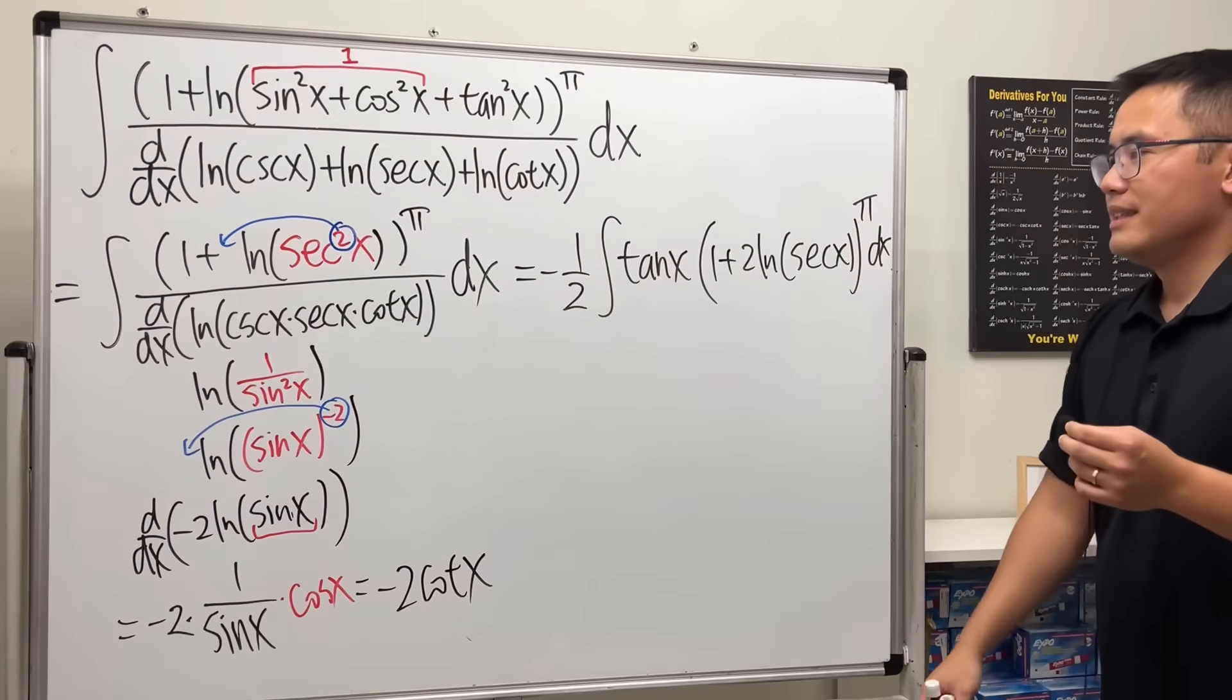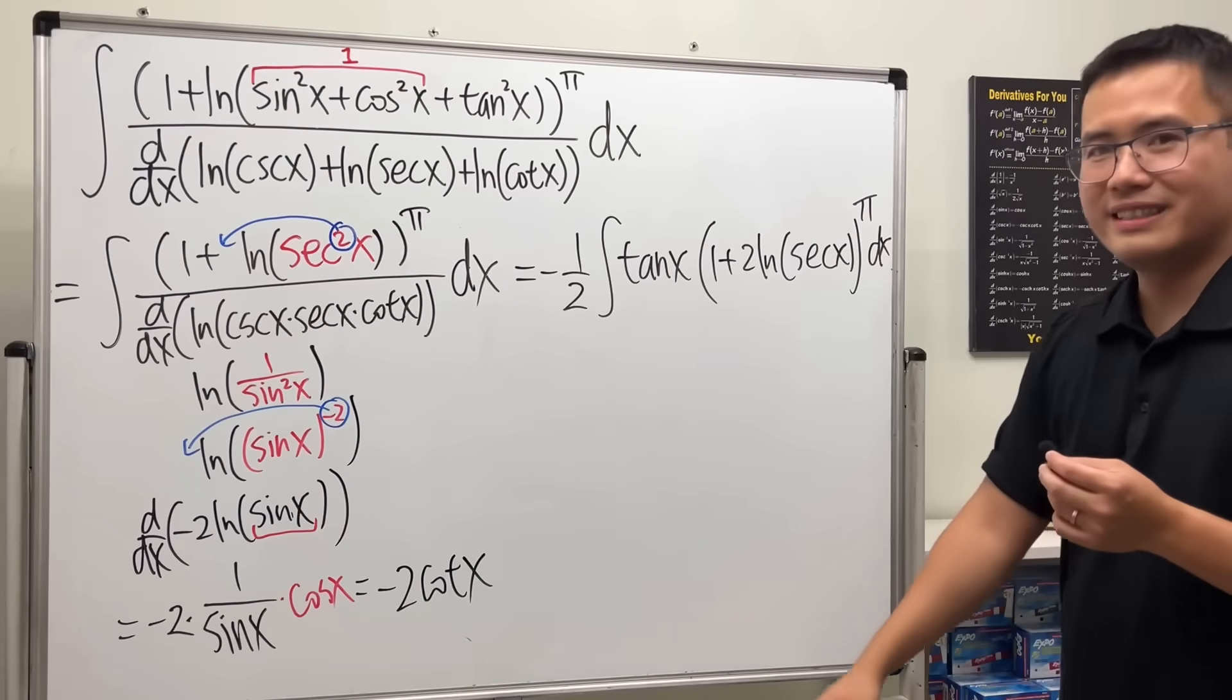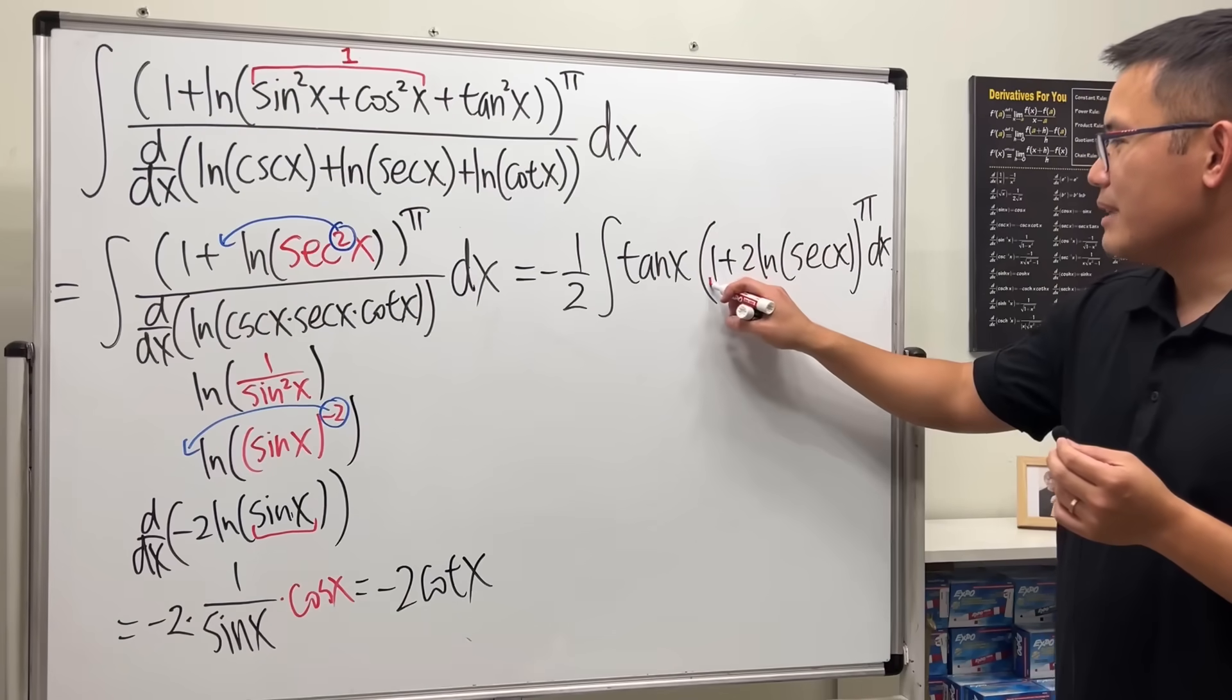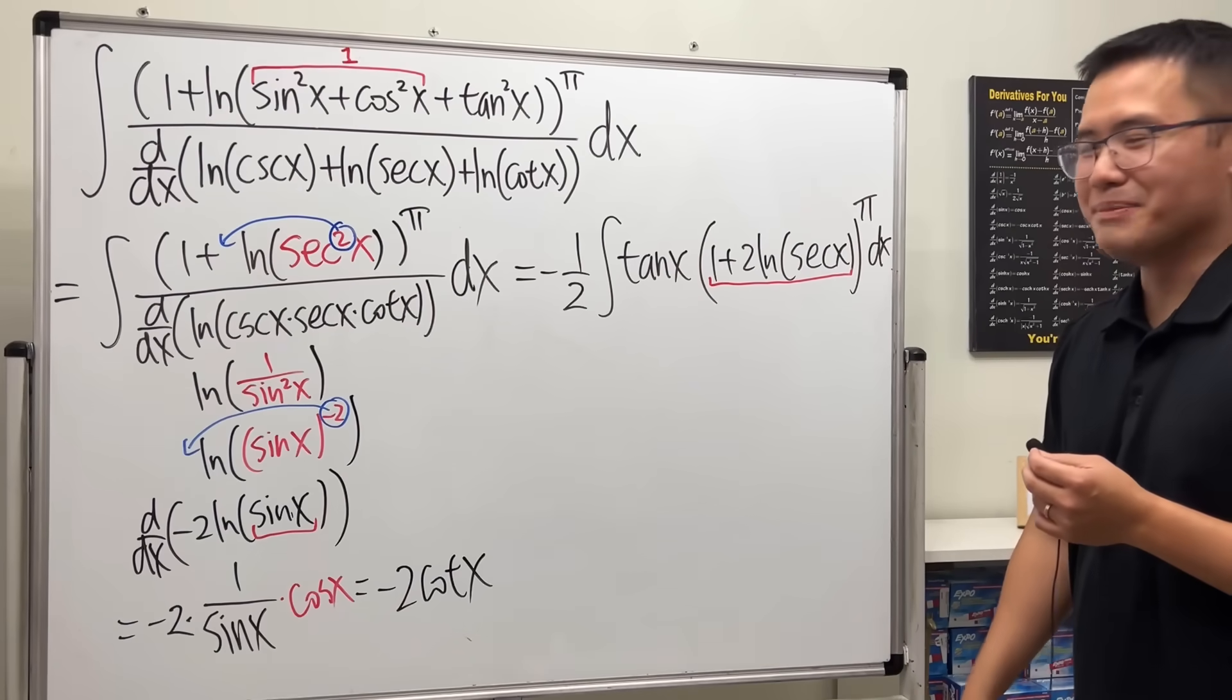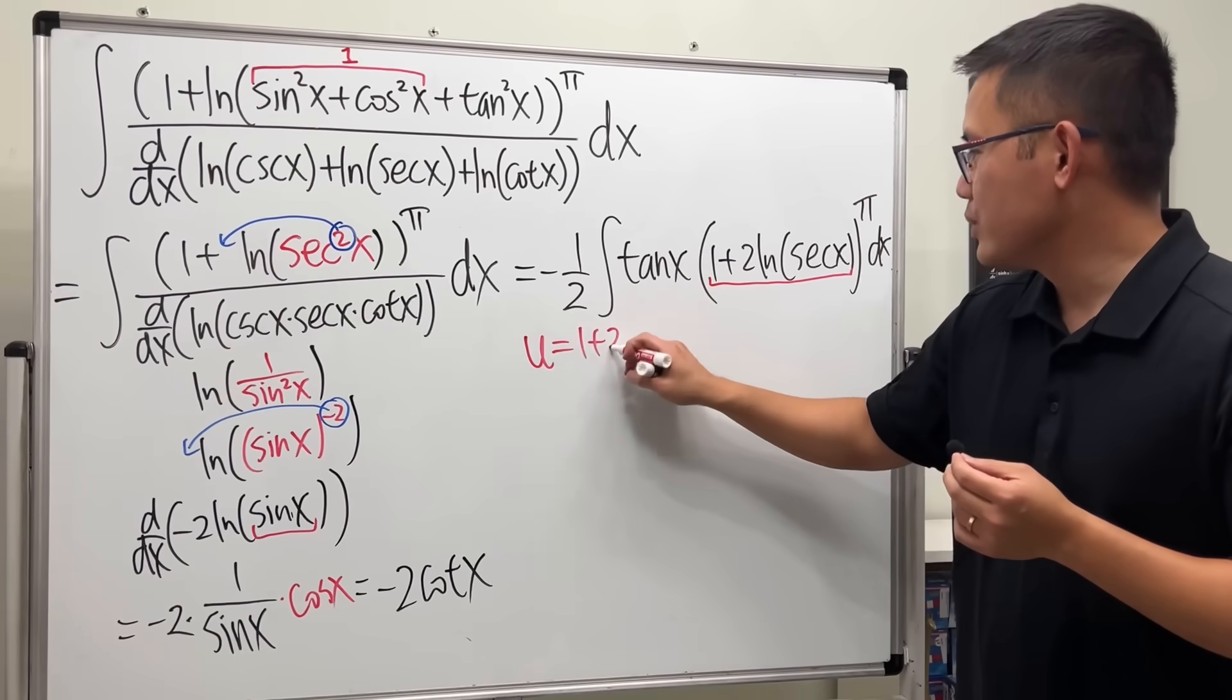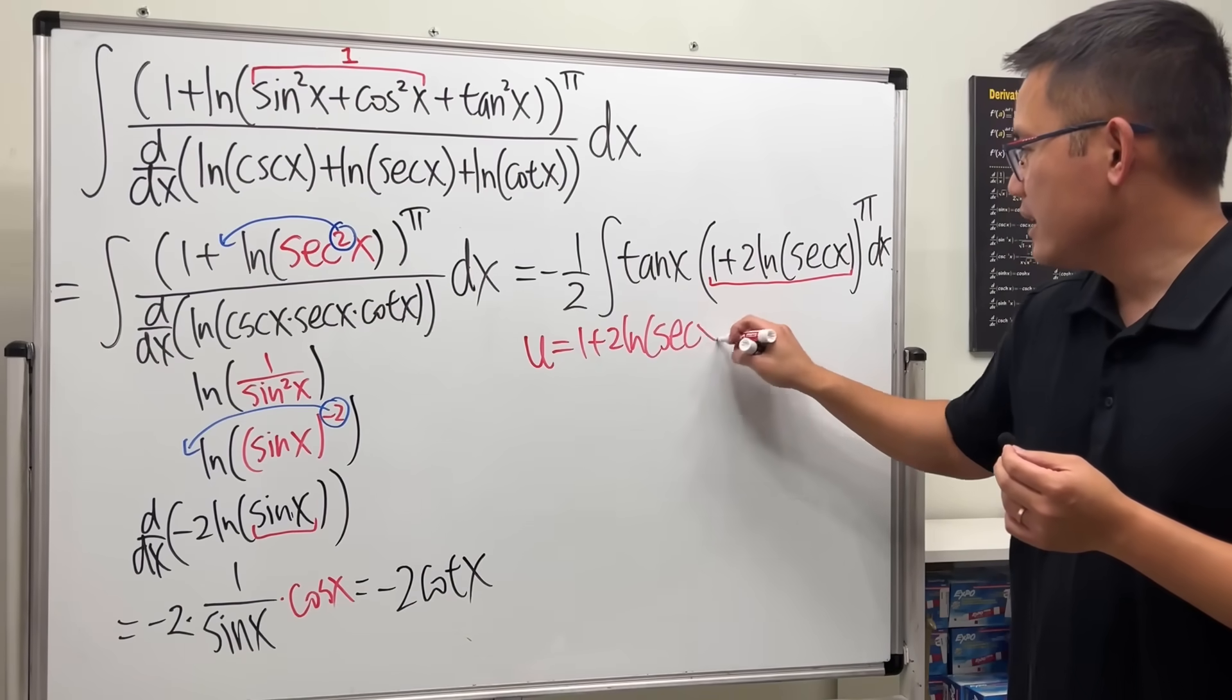So, aha, can we really solve this? Yes, of course, because I make this. Check this out, I'm going to take a very nice u sub. Put it to be the inside, let u equal to 1 plus 2 ln of secant x.